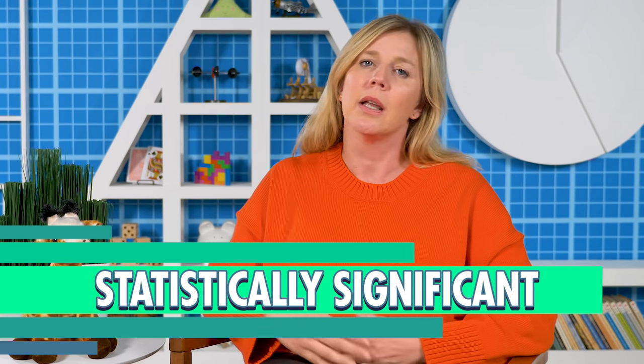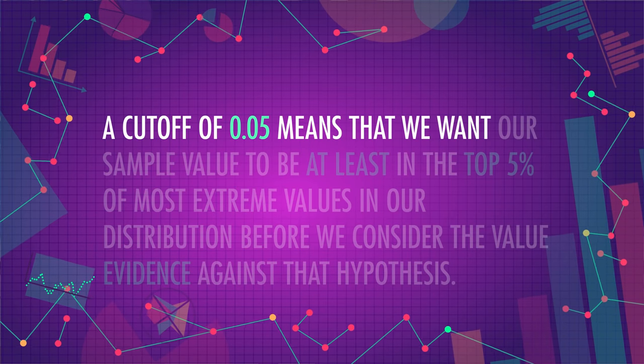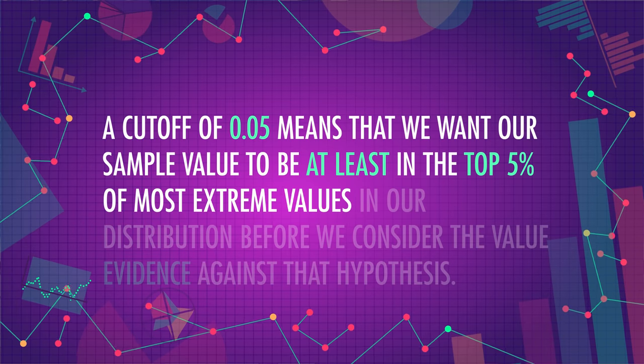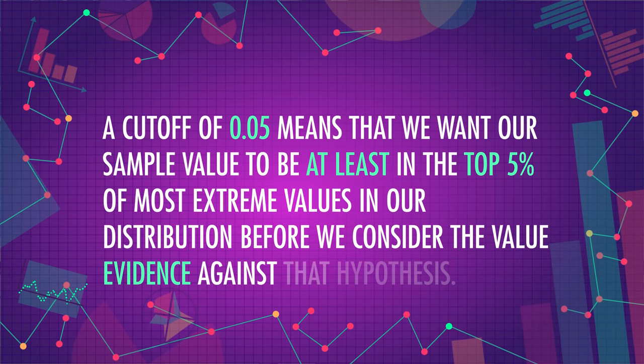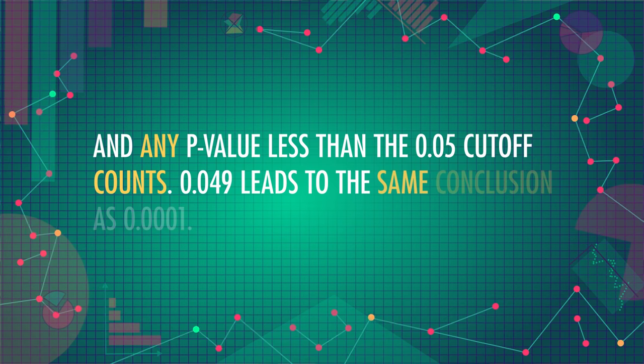We could set a cutoff at 0.05 and say that a p-value less than 0.05 is sufficient evidence to reject the null hypothesis. When we can reject the null, we consider our results statistically significant — basically meaning unlikely due to random chance alone — though as we'll see later, it doesn't always mean it should be meaningful to you. A cutoff of 0.05 means we want our sample to be in the top 5% most extreme values. Both 0.049 and 0.0001 would lead to rejecting the null. The current scientific consensus in most fields is that alpha should be 0.05, though there's huge disagreement about whether that's appropriate.